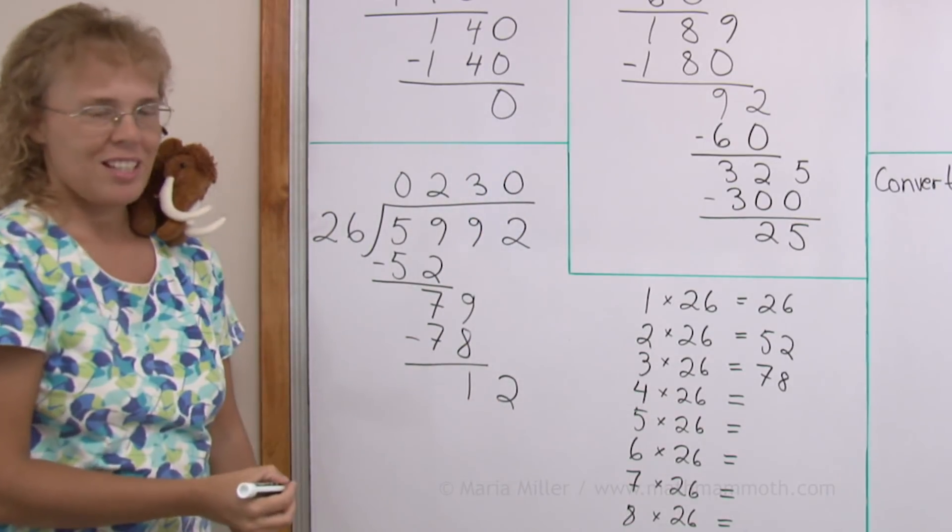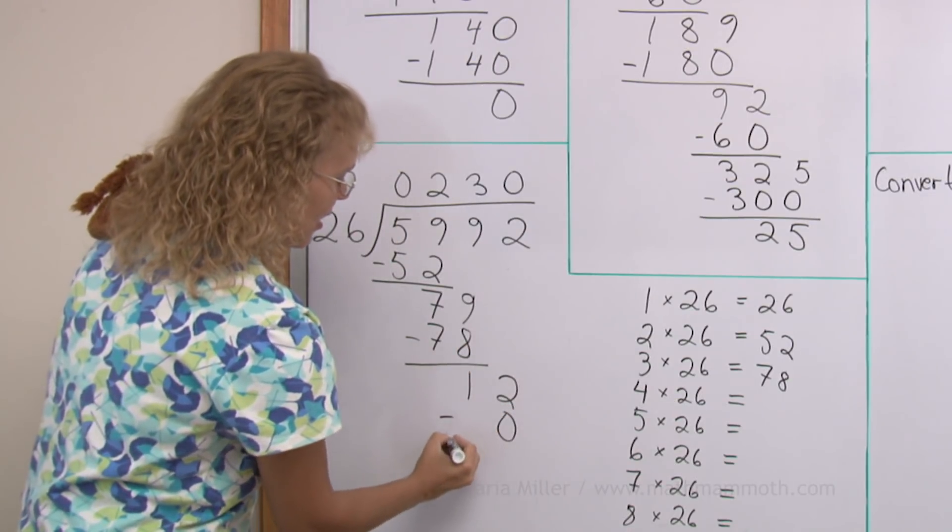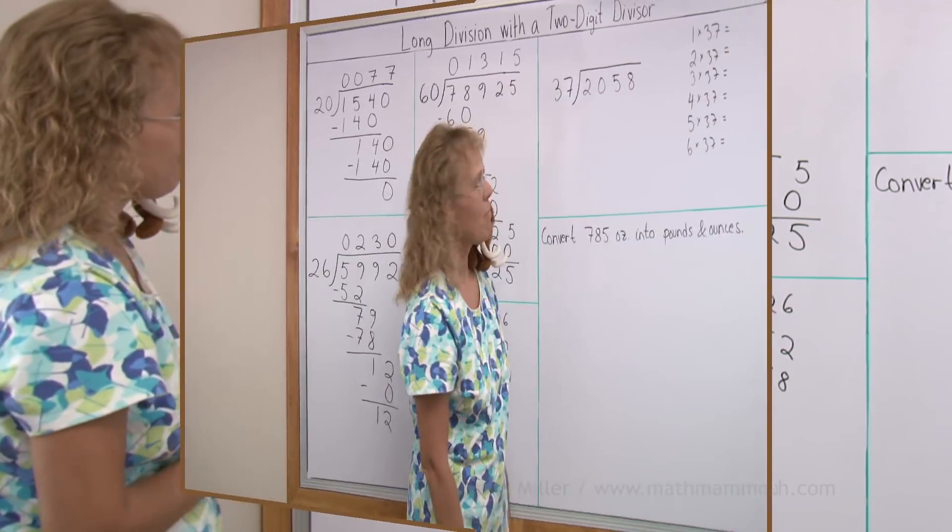0 times, right? And then, if you want to, you can go 0 times 26 and subtract and get 12. 12 is the remainder now.